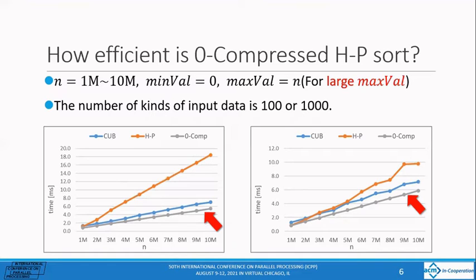The zero-compressed HP-sort is faster than the cub-sort when max val is large, but the number of kind of input data is small. The graph on the left shows the case where the number of kind of input data is 100. The graph on the right shows the case where the number of kind of input data is 1000.